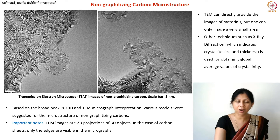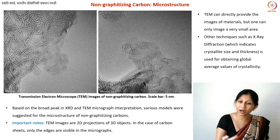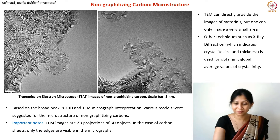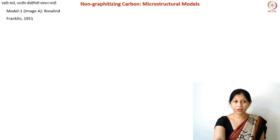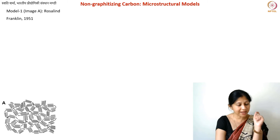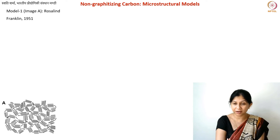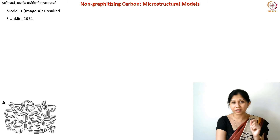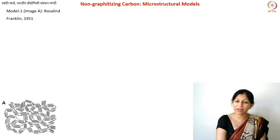We will see some more images and talk about some microstructural models. People have been trying to understand non-graphitizing carbons for a very long time. The first model was proposed by Rosalind Franklin in 1951. She was one of the first scientists to classify and differentiate between graphitizing and non-graphitizing carbons. I have shown only the image she proposed for non-graphitizing carbons; the one for graphitizing carbons is in her original paper. I have provided all references on the last slide.